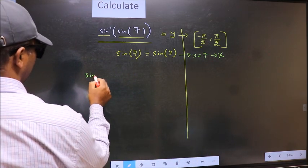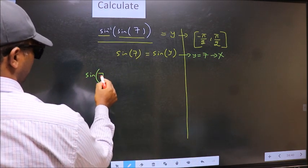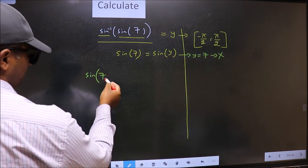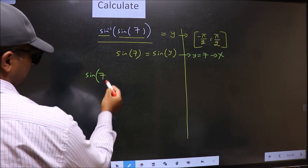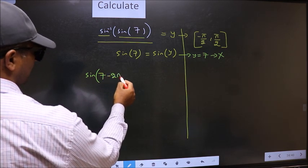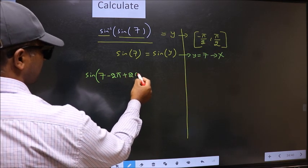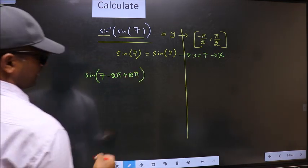7 exceeds that interval, so we should decrease it. To decrease, I subtract 2π. Now whatever we are subtracting, we should also add the same thing.